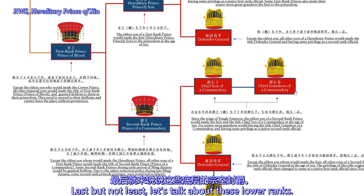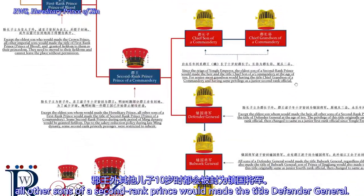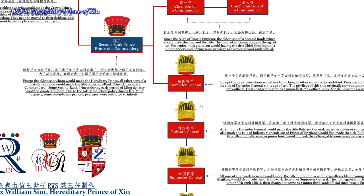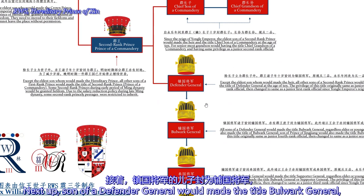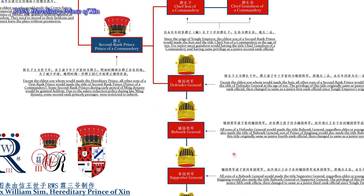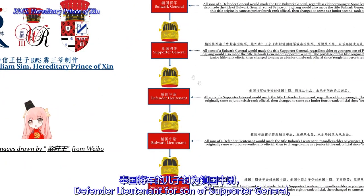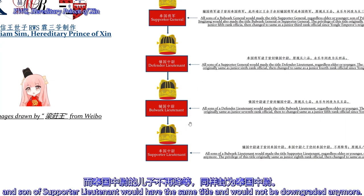Last but not least, let's talk about the lower ranks. Except for the eldest son, all other sons of a second-ranked prince would receive the title of Defender General. Some sons of a second-ranked prince would also receive the title of Bulwark General due to their mother's lower status. The costumes and salaries of this rank were the same as a first-ranked officer. The son of a Defender General would receive the title of Bulwark General; Supporter General for the son of a Bulwark General; Defender Lieutenant for the son of a Supporter General; Bulwark Lieutenant for the son of a Defender Lieutenant; and Supporter Lieutenant for the son of a Bulwark Lieutenant. A son of a Supporter Lieutenant would retain the same title without further degradation.